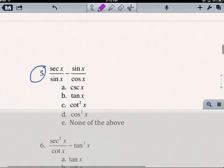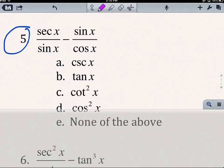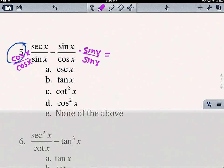The second one I want to go through is number 5, and number 5 is different because we have fractions. So the first thing I want to do is get a common denominator, which is going to be cos·sin. So I'm going to multiply by cos/cos, and by sin/sin. So I get cos·sec. Now cosine and secant are reciprocals, so I end up just getting 1. Sin times sin is sin²x.